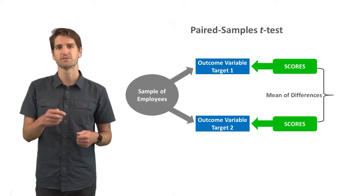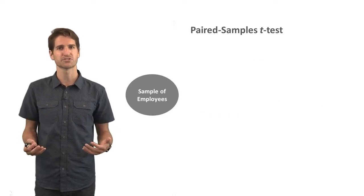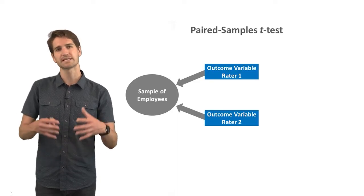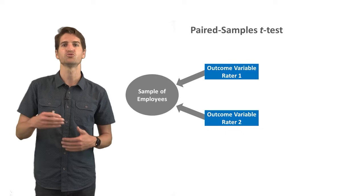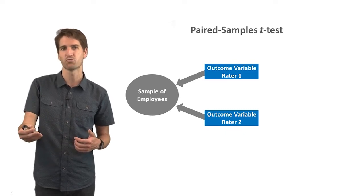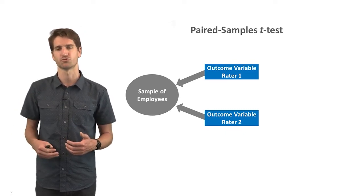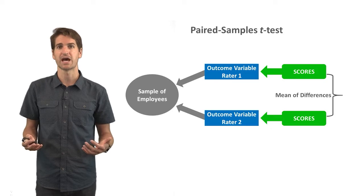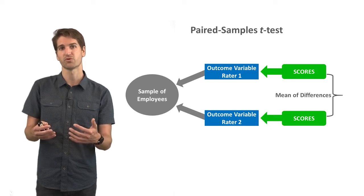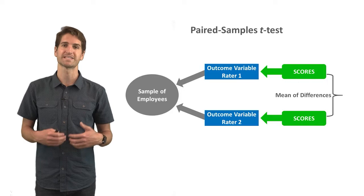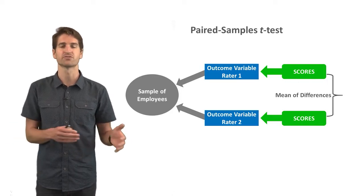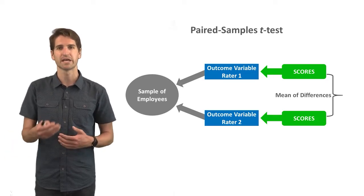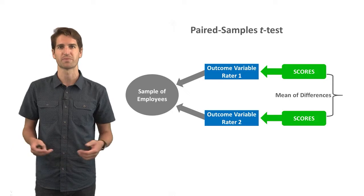Their responses are not independent of one another. In a third scenario, a sample of employees is being rated by two different raters — say supervisor one and supervisor two. We're interested in whether there is a difference in how rater one rates the sample versus how rater two rates that same sample. We'd compute all the difference scores and test whether the mean of those difference scores is significantly different from zero using a paired samples t-test.